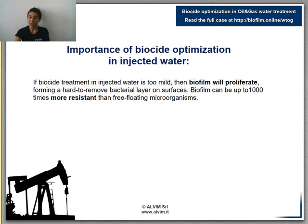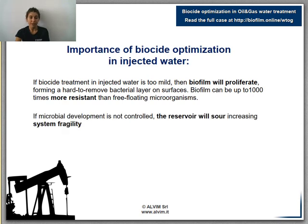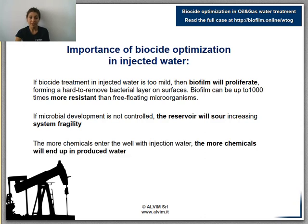Biocide optimization is fundamental because if the biocide treatment cannot keep bacterial growth under control, then biofilm will proliferate. Moreover, the presence of anaerobic bacteria in seawater generates reservoir souring, which increases system fragility. Optimized biocide treatment is also essential because the more chemicals are dosed, the higher the efforts and costs to eliminate them later in the produced water.